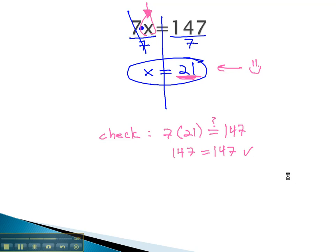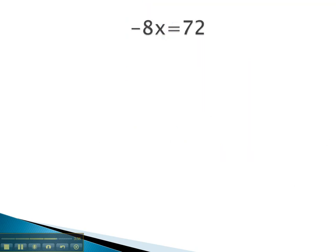Let's try one more. In this problem, we have negative 8x is equal to 72. Notice this is different than negative 8 plus x, or x minus 8. Because the x is right next to the negative 8, we know that means multiplication. The opposite of multiplication, then, is we have to divide both sides by the number, the exact same number, negative 8, on both sides. That way, the negative 8's divide out, leaving just x is equal to negative 9.